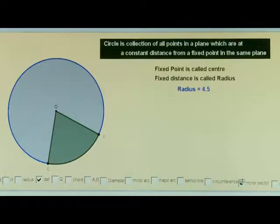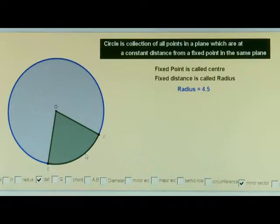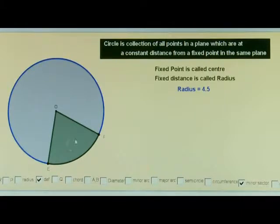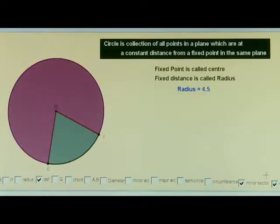Now observe this portion of the circle. This portion is made up by an arc of the circle and the two radii at the ends of the arc. This portion is known as a sector of the circle. The sector of the circle made by the major arc is known as the major sector.